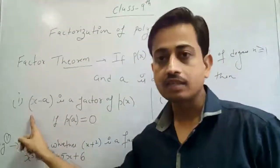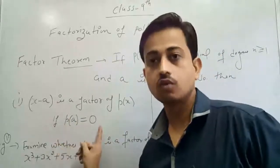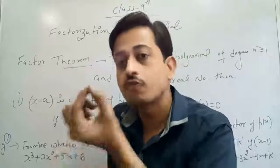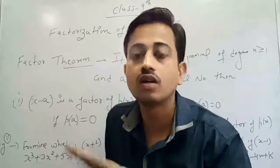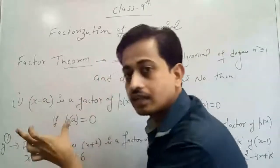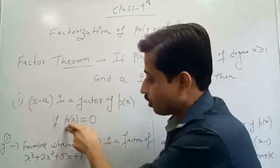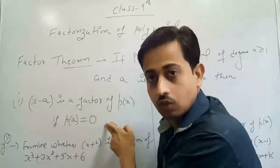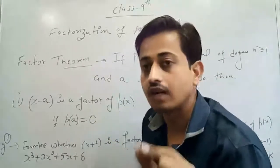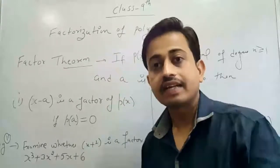First case: x − a is a factor of the polynomial if P(a) = 0. It means if any question asks you to check whether a given expression is a factor of the polynomial, you put the value 'a' into the polynomial. If the result is 0, then you can say that it is a factor of the given polynomial. This can be understood very clearly by taking an example.